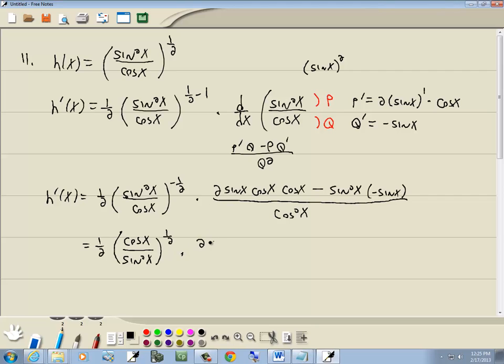Times two sine x. Cosine times cosine is cosine squared. And negative times negative is positive. And sine squared times sine gives us sine to the third. All over cosine squared.